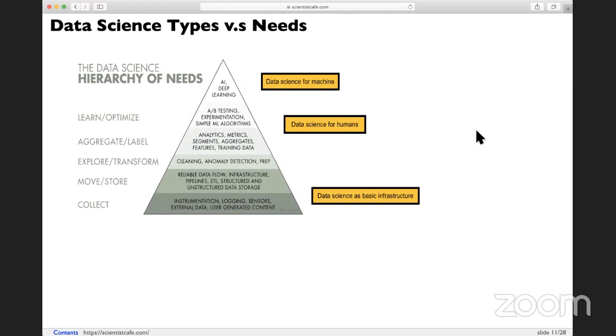Once you have that infrastructure laid out, you will have data science for humans. Those will be analysts, data scientists, and research scientists. They will start to do some basic analysis. And once you know the basic status of your business - what's the key metric, what's the KPI?